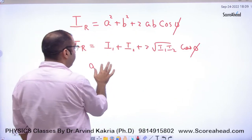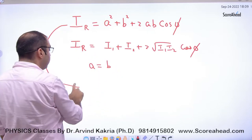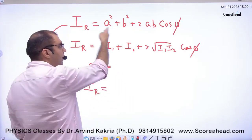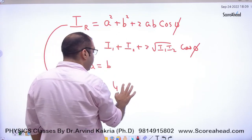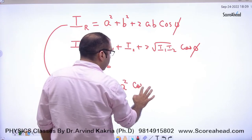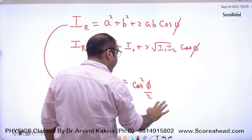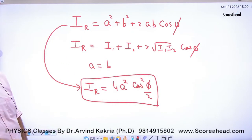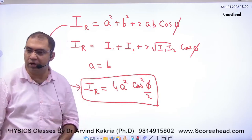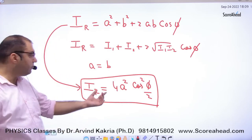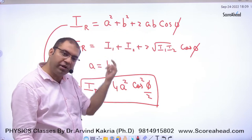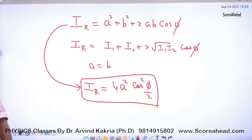अगर a और b बराबर है तो resultant intensity में simply a की जगह a put कर सकते हो, तो answer आ जाएगा। या फिर 4a²cos²(φ/2) वाला formula use कर सकते हो — इससे calculation बचती है। Objective questions में यही formula use होता है। 4a²cos²(φ/2) — इन दोनों में कोई फर्क नहीं है, बस पहले वाले को simplify करना पड़ेगा, यह already simplified है।